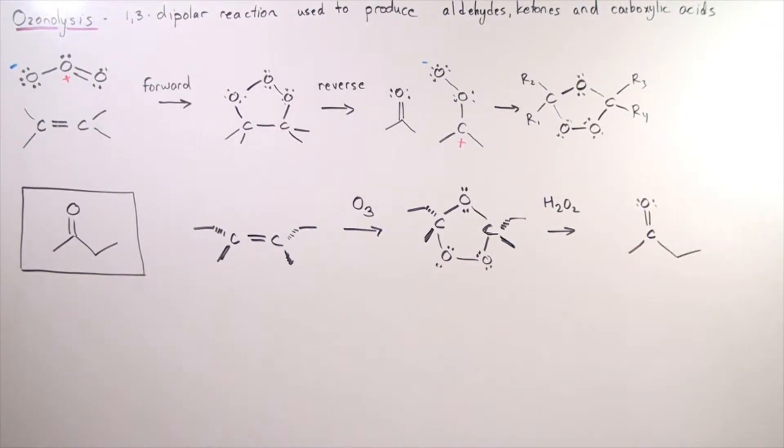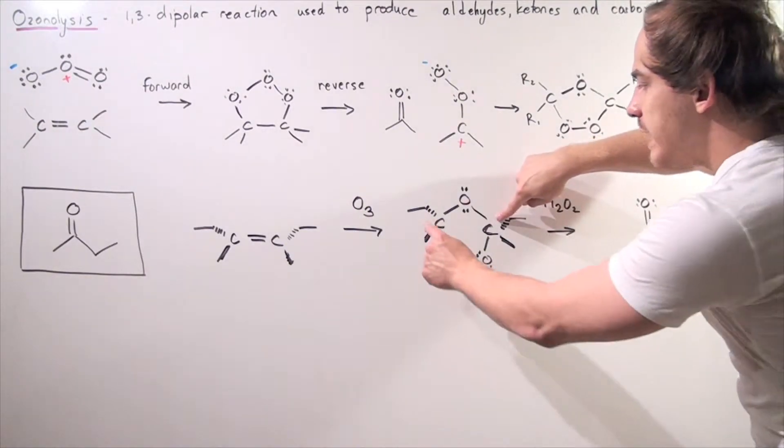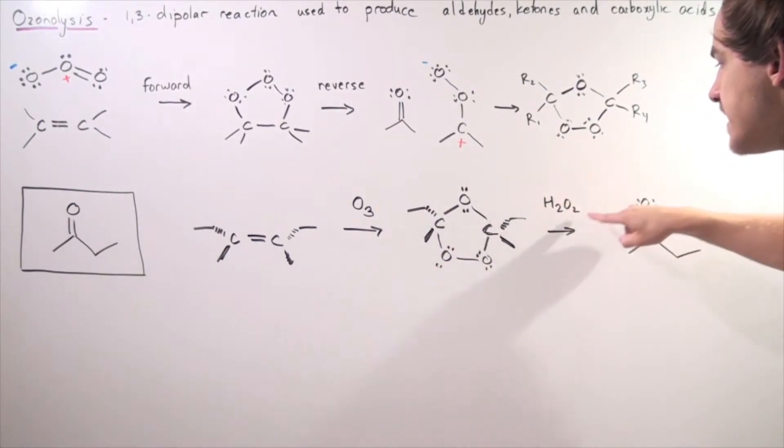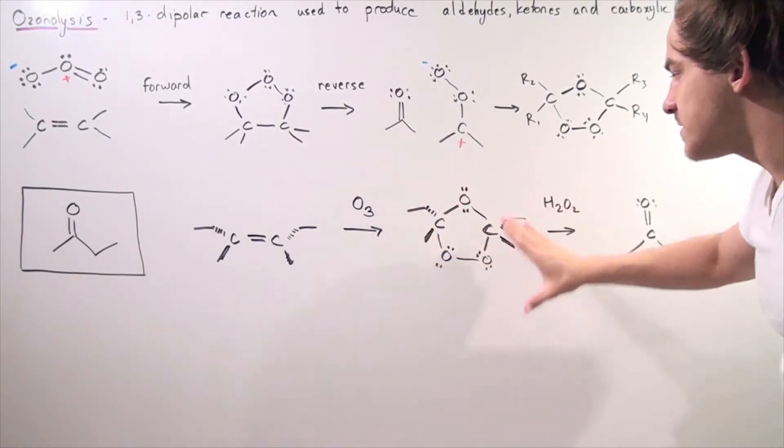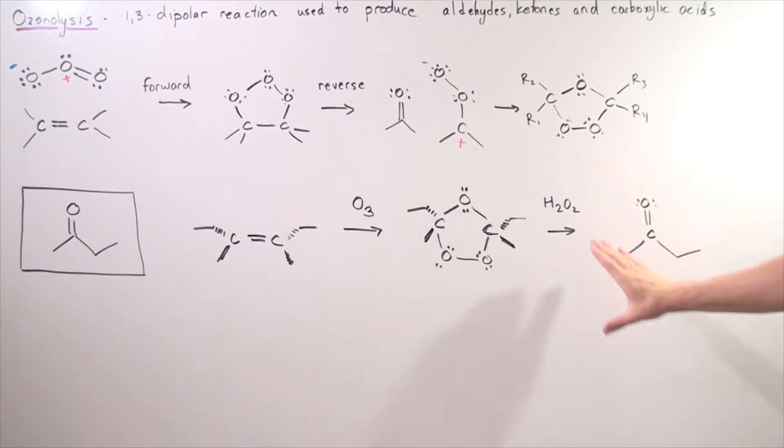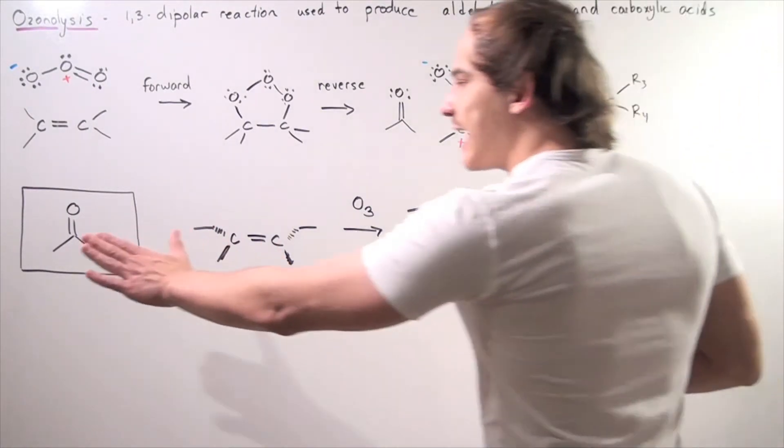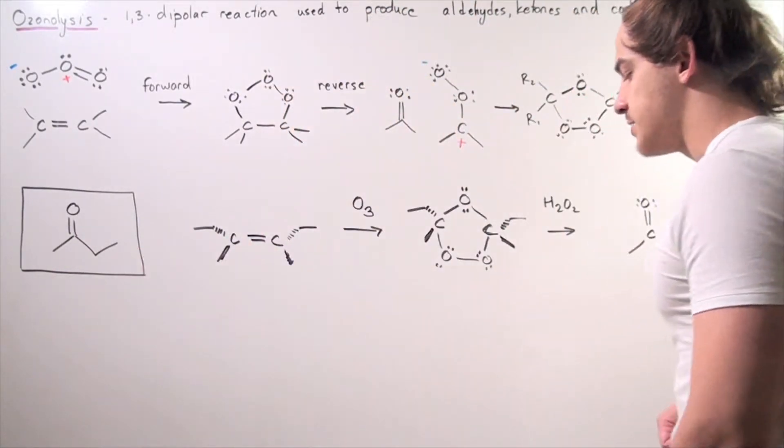Actually, we get two of these molecules because we have two carbons here. So when this molecule reacts with this compound, we get the following product. We get two of these guys, which is exactly what we wanted to produce in the first place.